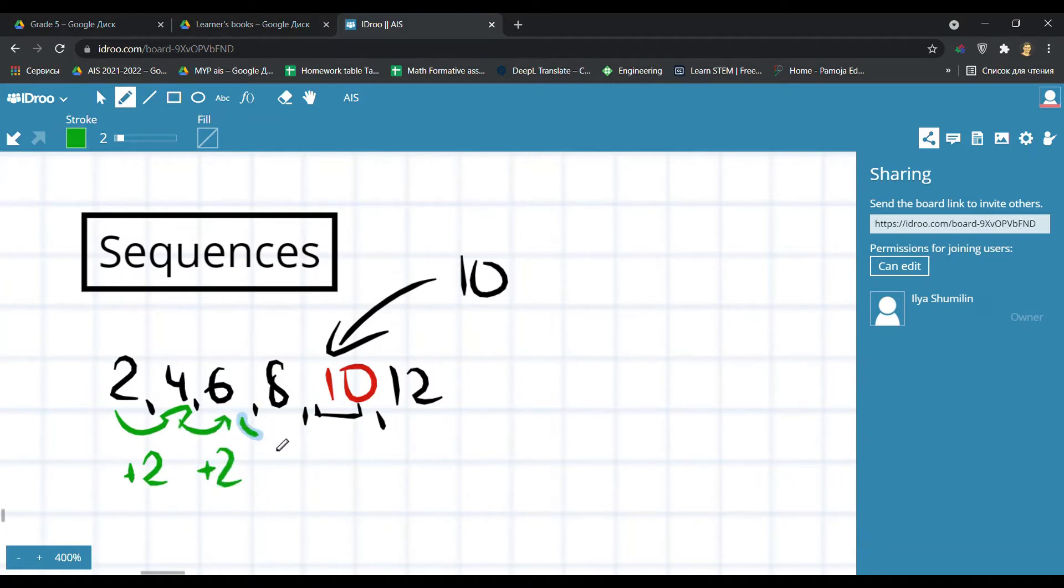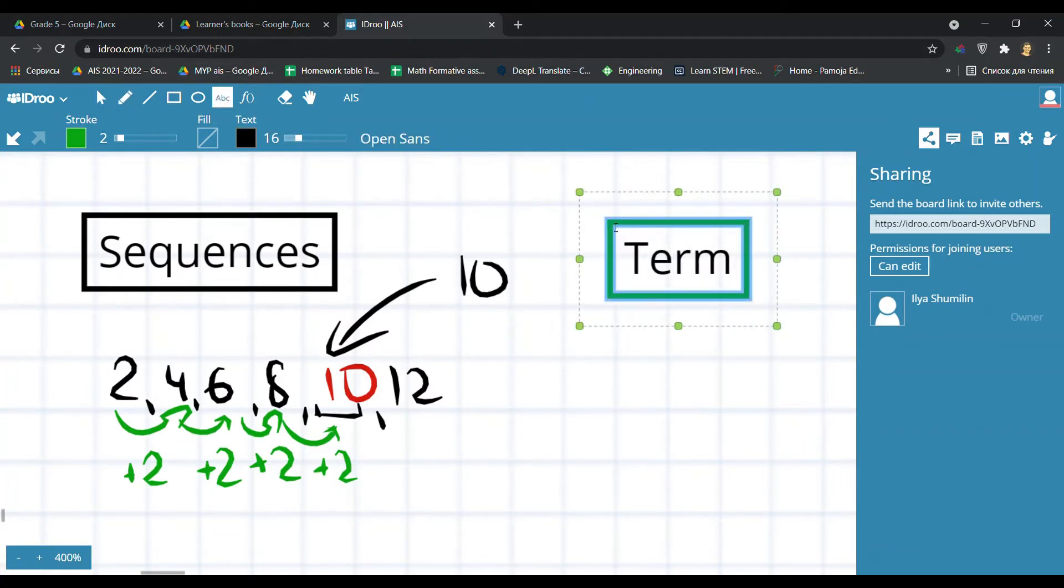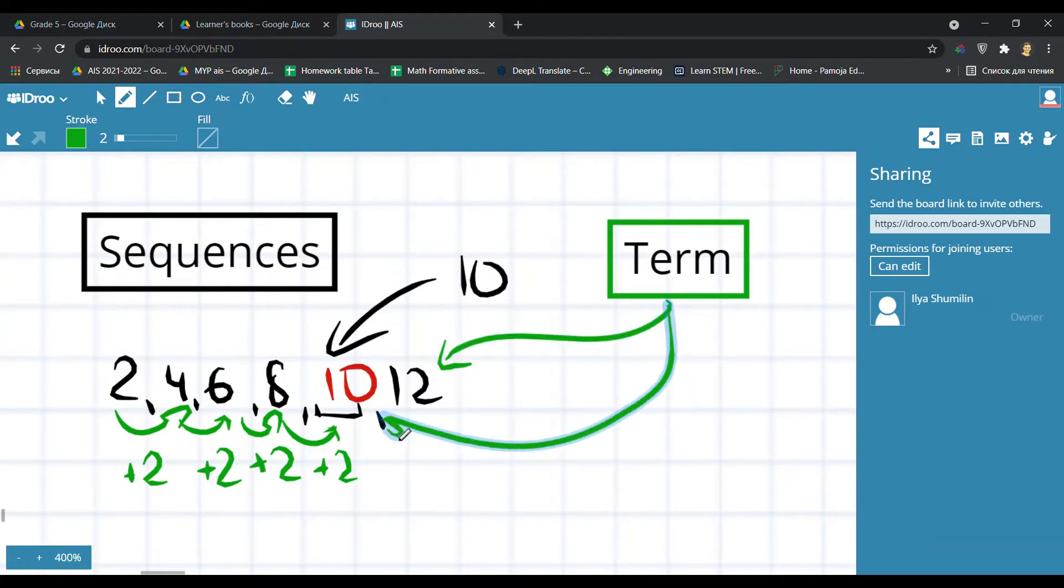Here is the sequence. We call it sequence because we have terms here and some kind of a rule of a sequence. First of all, I think we should write down term. What is term? Term is a number or element of a sequence. For example, 12 is a term, 10 is also a term, 8 is also a term.